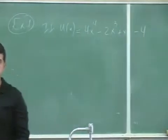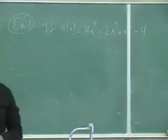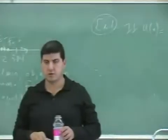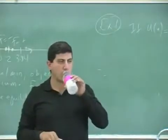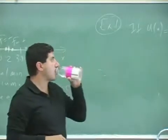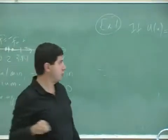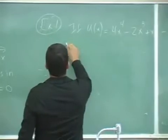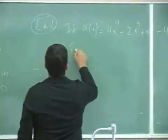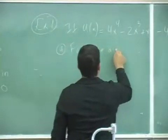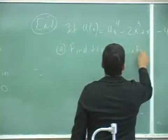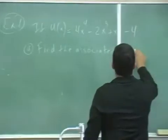Given the potential energy function U = x to the fourth minus 2x cubed plus x minus 4. I'm going to ask you to find the associated conservative force.